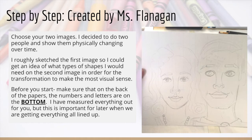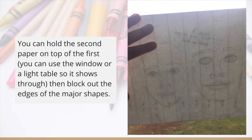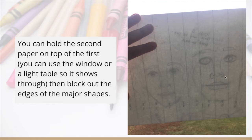Before you start, make sure that on the back of the papers, the numbers and letters are on the bottom. I have measured everything out for you, but it's important for later that you have everything lined up, so make sure everything's labeled now and you don't wait until later. You can hold the second paper on top of the first, like to a window or a light table, and block out the same edges of the major shapes. She's showing the transformation between someone young versus someone old, making sure the shape of the head and key features align between both pieces.